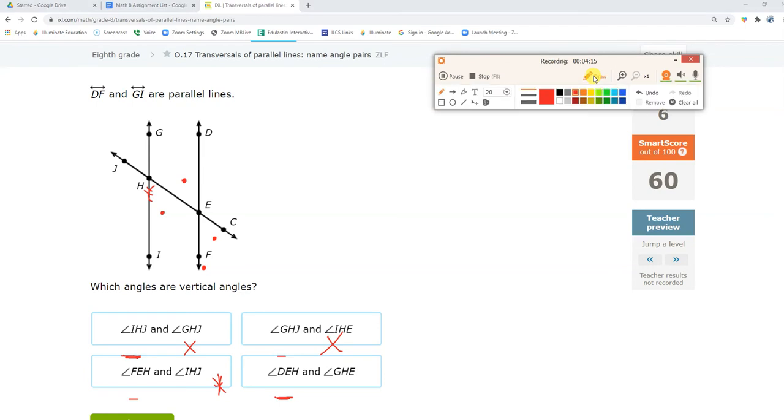Vertical angles. I like verticals. Vertical angles are going to have to have the same center letter. So those would work. Wouldn't work. Would work. Wouldn't work. So let's just check these. IHJ with GHJ. Nope. Those aren't verticals. By process of elimination, it's got to be this one. But we'll check it. GHJ, this one, with IHE, this one. Yes. Those are verticals. So it's this one. And we're going to jump a level.